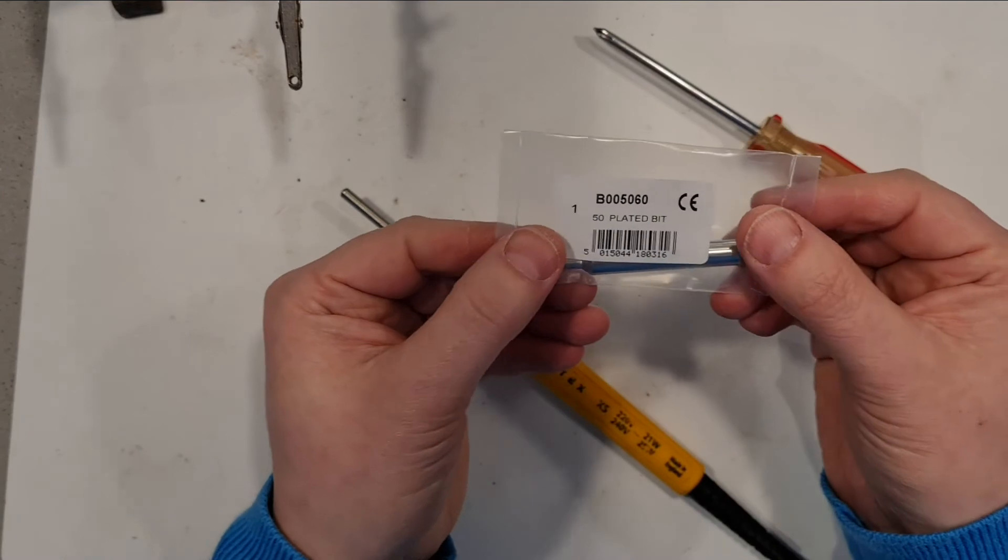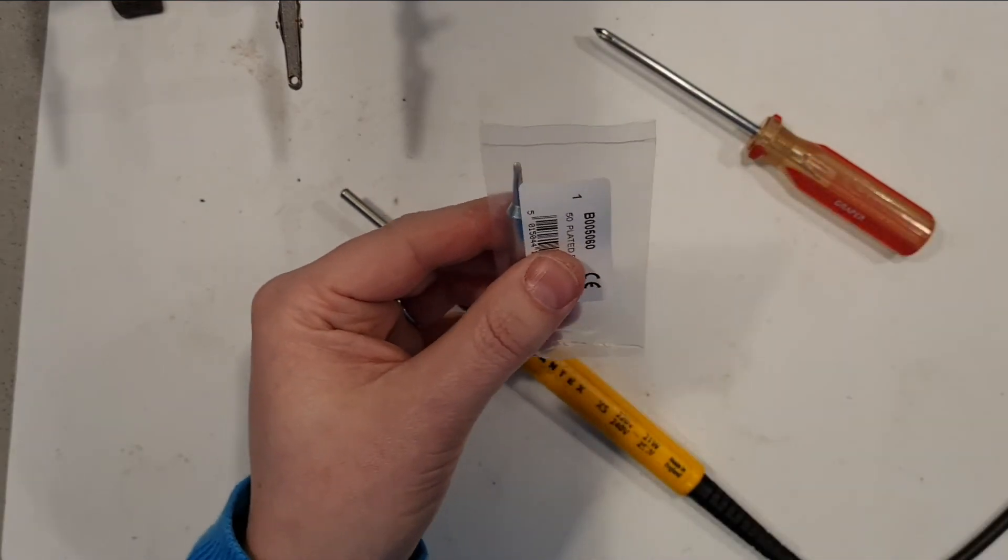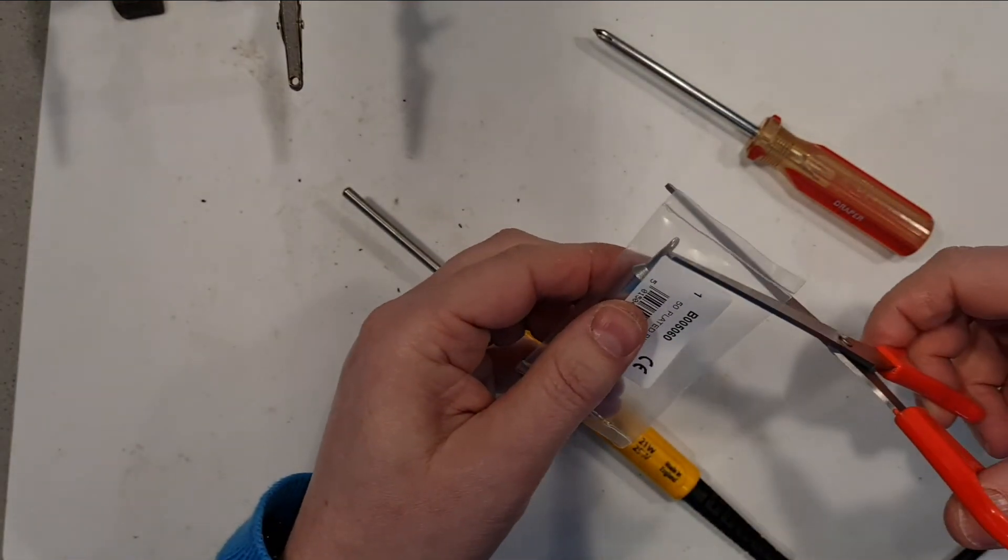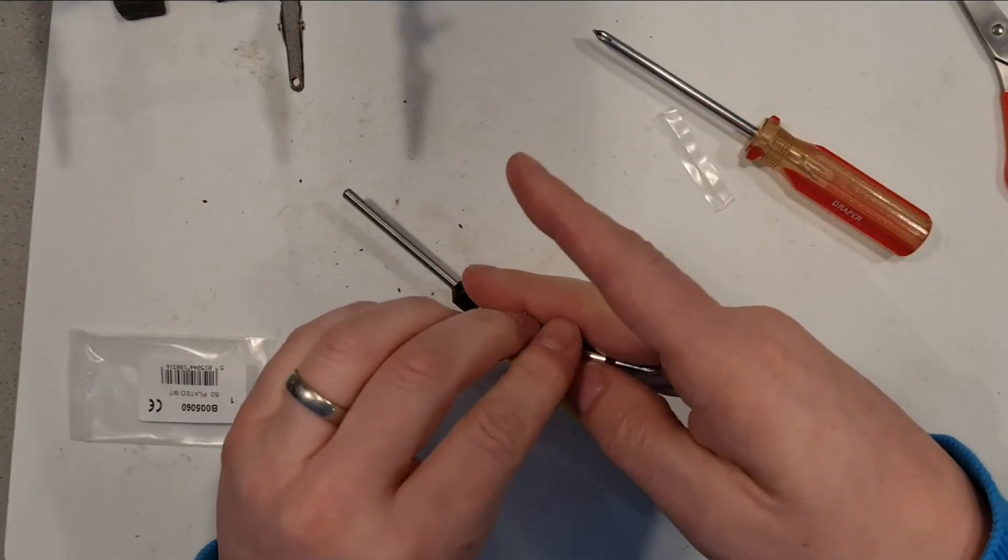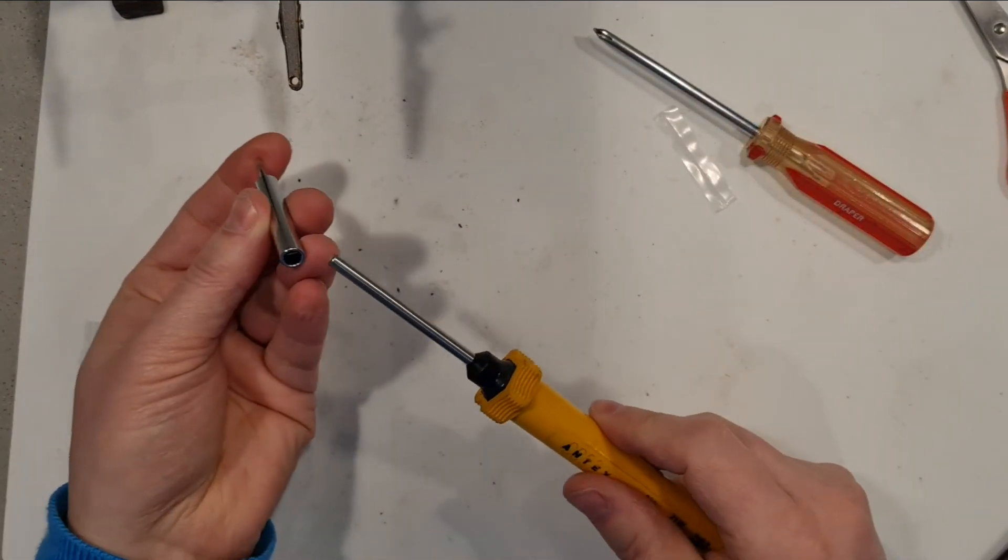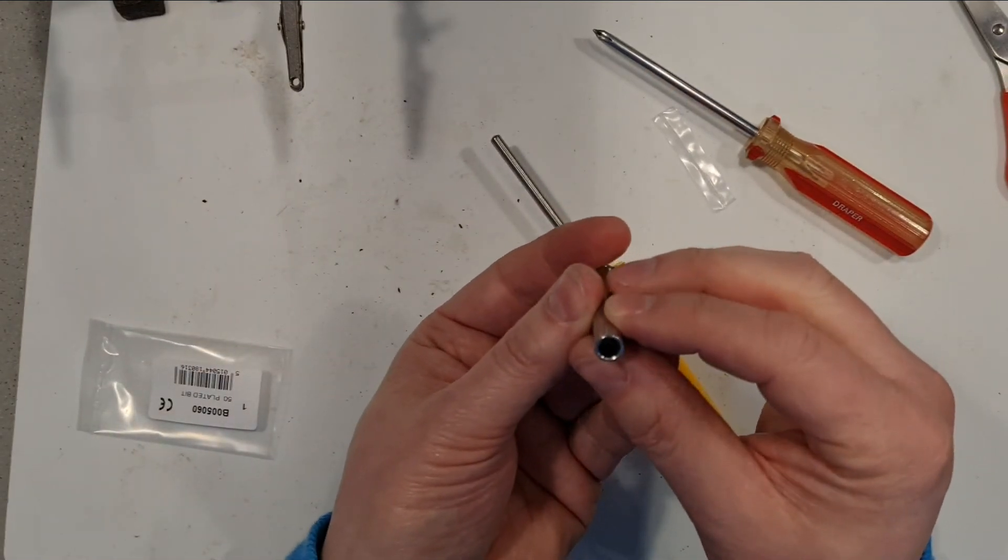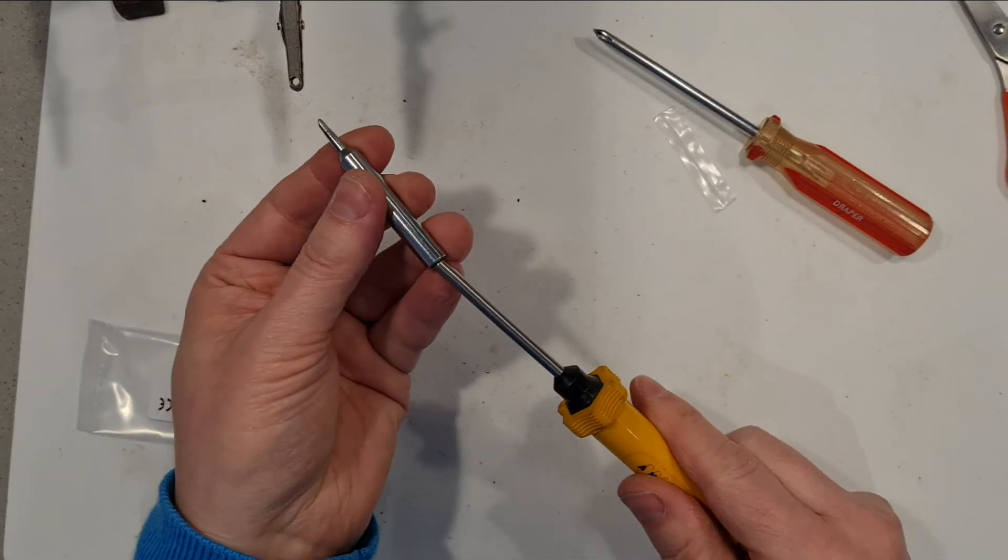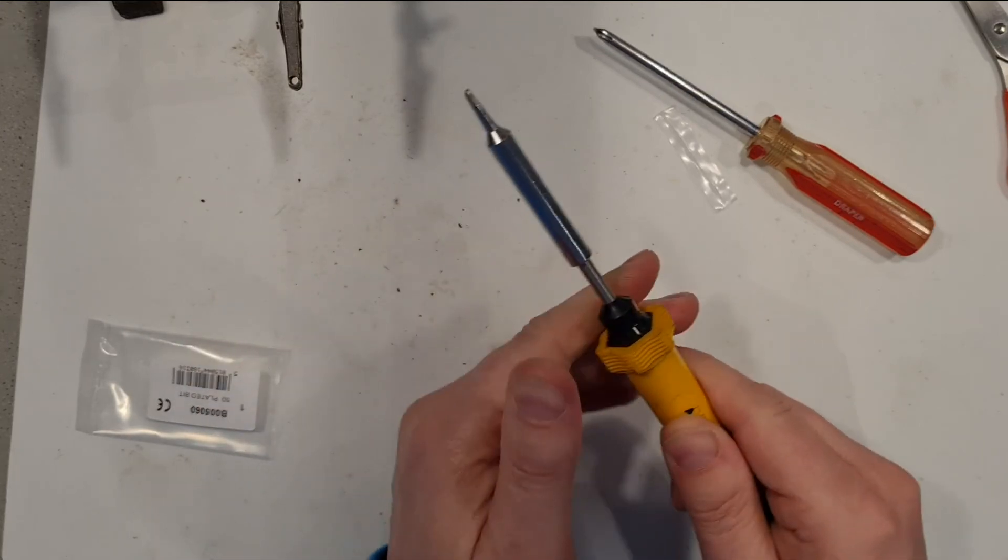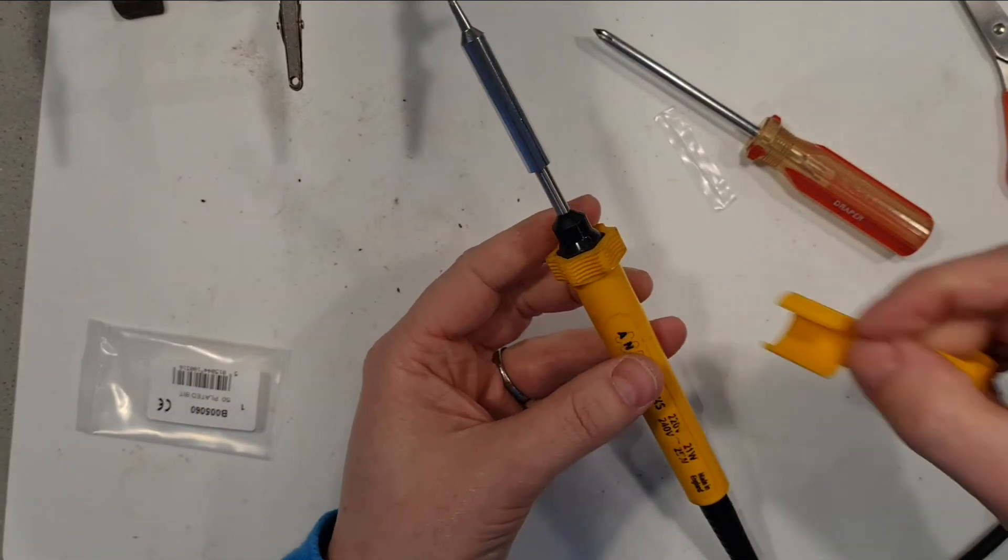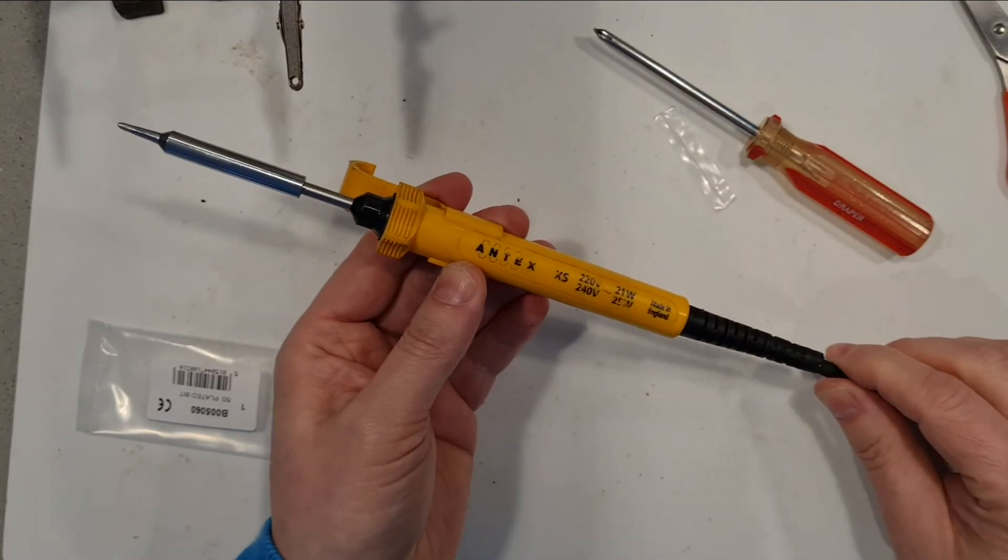And then we just bring our cord grip back in. As I say, it was just an interference fit like that. In terms of the tip, I've gone for a 50 plated bit, B005060. It's just, I don't know, these are just an open. And then, well that's interesting isn't it? It's got a sort of pentagonal grip inside. And then that just fits over the end, like that. There we go. Now we can reattach the clip. And let's plug it in to see if it works.